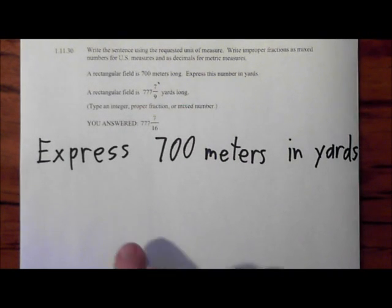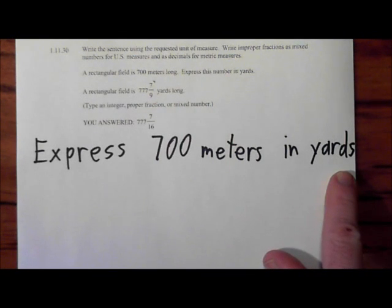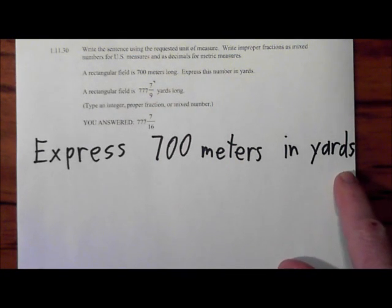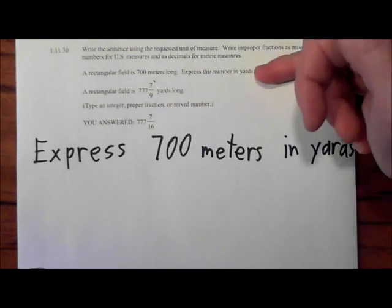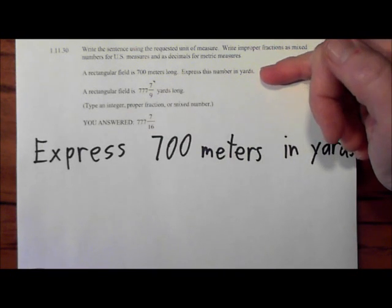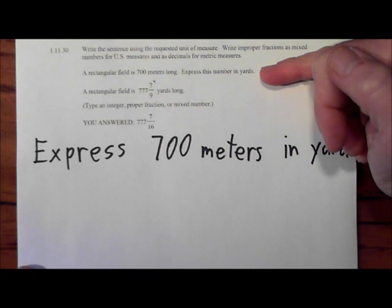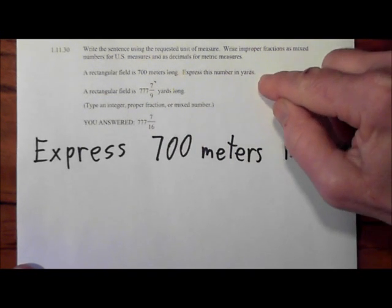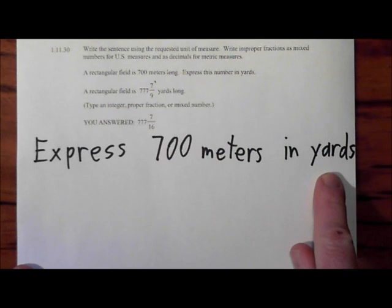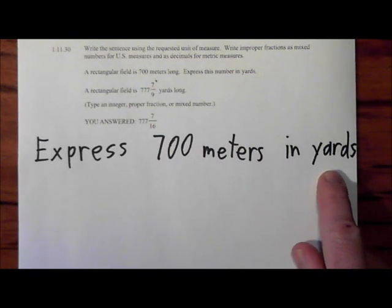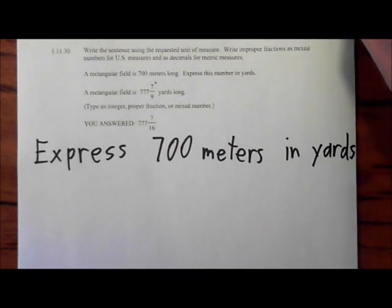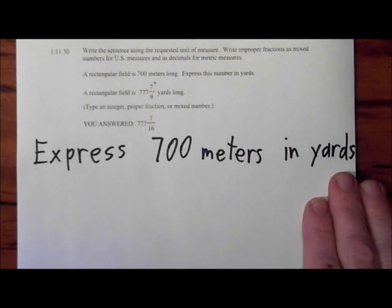All right, we're asked to express 700 meters in terms of yards. The question actually says a rectangular field is 700 meters long, express this number in yards. I know that's too small for you to read, so basically what we have to do is written in bold black print here. In order to do these conversions, you always need an equivalency.